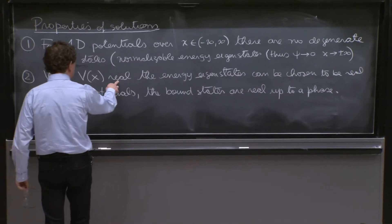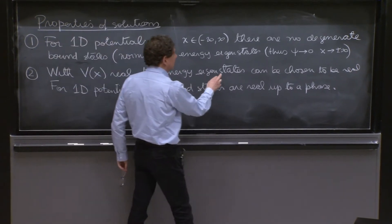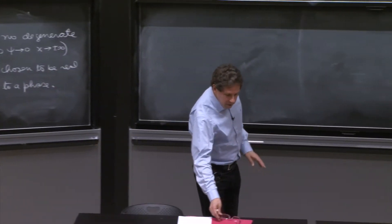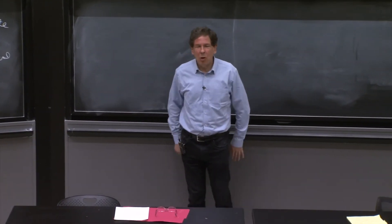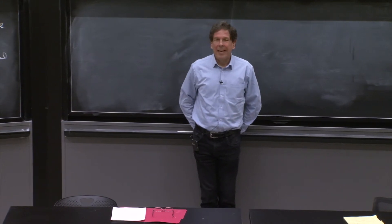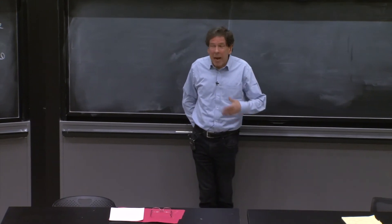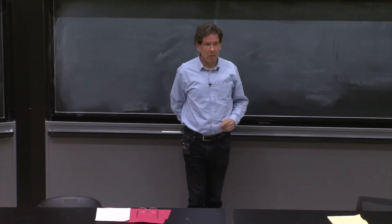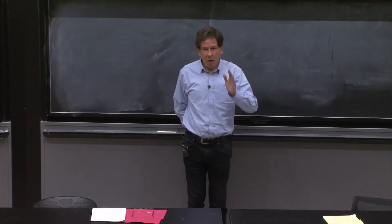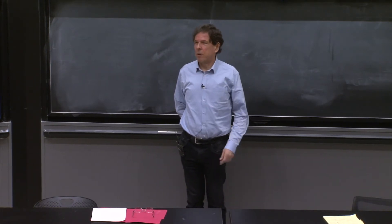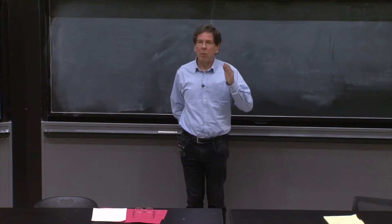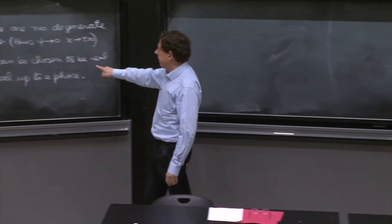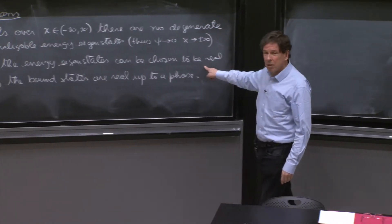There's no contradiction because the full solution to the time-dependent Schrödinger equation is complex. But here is a statement: with V(x) real, the energy eigenstates can be chosen to be real. The words 'can be chosen' are very important here. It means that you may find a solution that is complex, but you need not stick to that solution. There's always a possibility to work with real solutions.